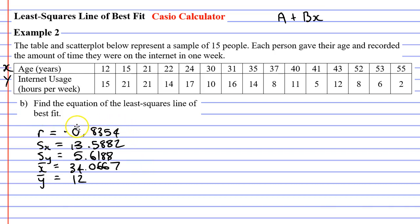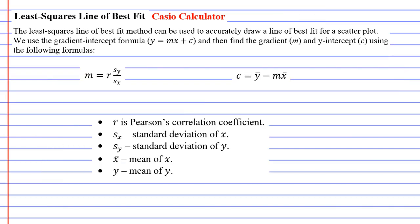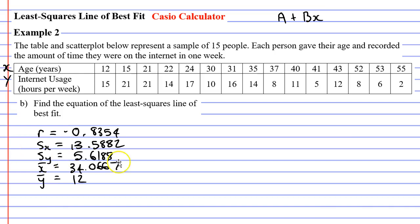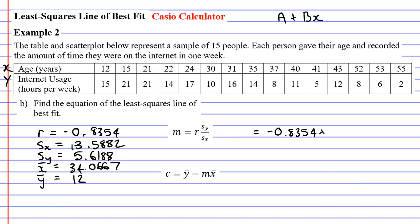You might have noticed I've been working to four decimal places. This is because I'm going to substitute these values into the formulas and I don't want to round too early — I want to do that when I get the final solution. So let's get our formulas and plug these values in. We'll start by finding m, which stands for gradient. It's found by taking r (which is negative 0.8354) and multiplying it by the fraction Sy over Sx. Sy goes at the top: 5.6188, and Sx goes at the bottom: 13.5882.